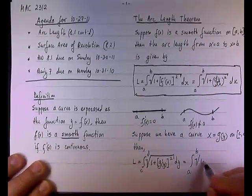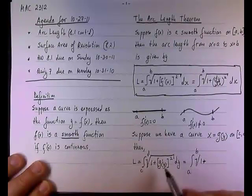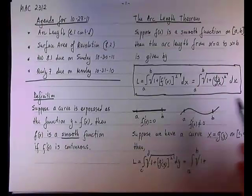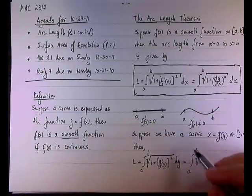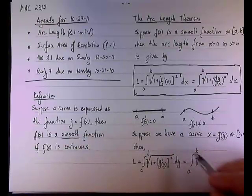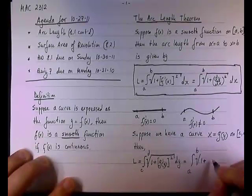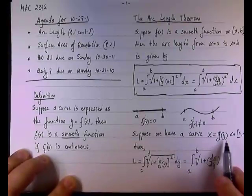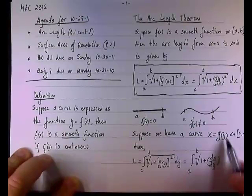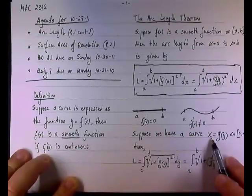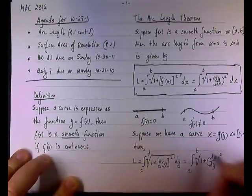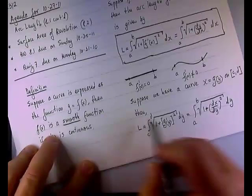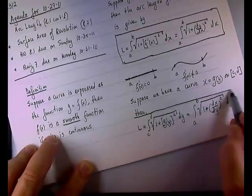We can also write it as the integral from c to d of the square root of 1 plus, and instead of g', we can use Leibniz notation: dx/dy. Because the function is x equals g(y), the input is y and the output is x. So we'll have (dx/dy) squared, and the variable of integration is dy. This is another form.